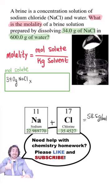Now use this as a conversion factor to convert. Multiply 34.0 grams by 1 mole over 58.5 grams. I put the grams on the bottom to cancel the starting unit of grams and give me moles of solute.